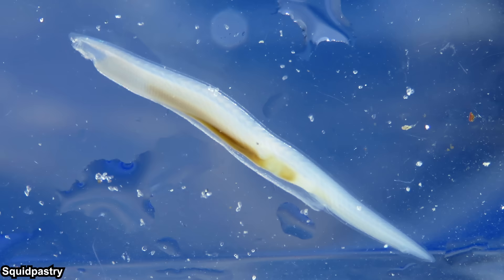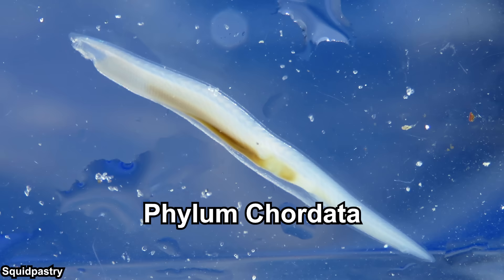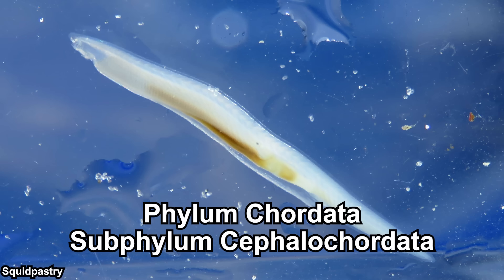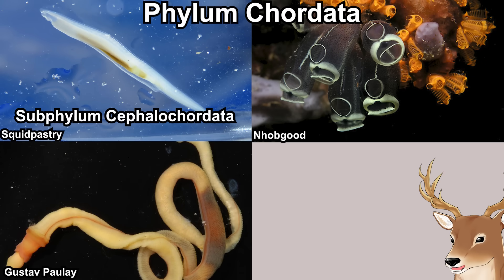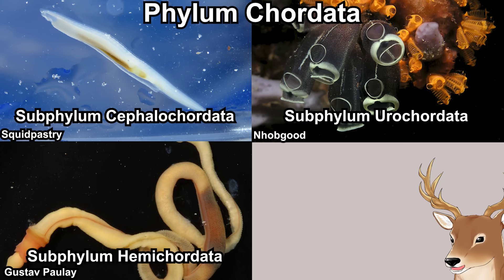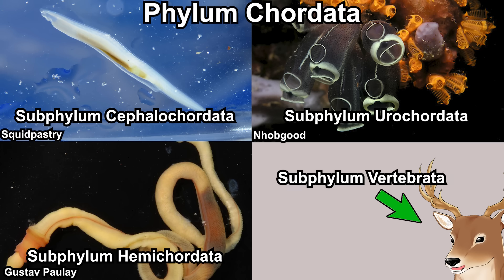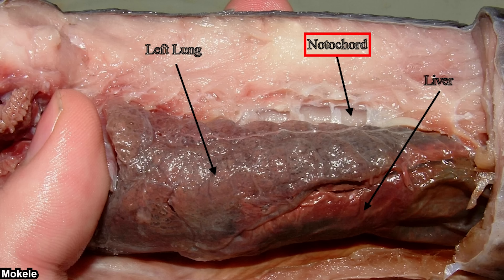First of all, a lancelet is not a fish. A lancelet is still a chordate, though — to be precise, a cephalochordate. A little bit of taxonomic history: Phylum Chordata was divided into four subphyla a long time ago — Cephalochordata, which is the lancelet we're talking about; Urochordata, which is validly known as Tunicata, the tunicate; Hemichordata, the hemichordate; and of course Vertebrata, vertebrates.